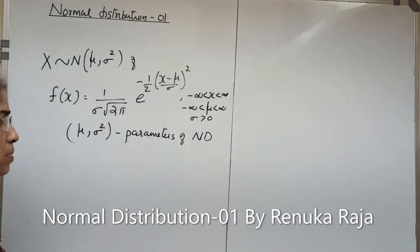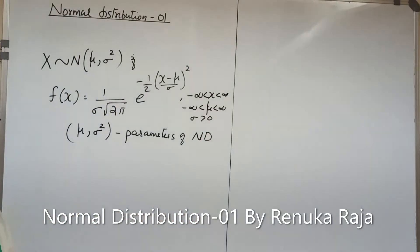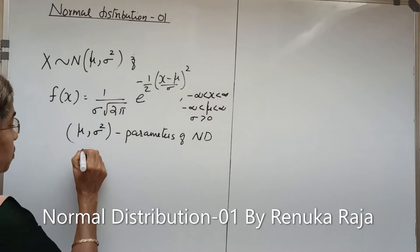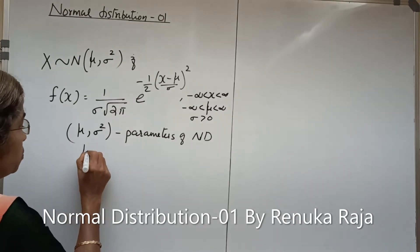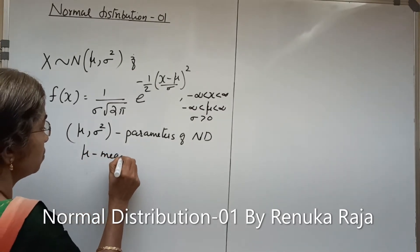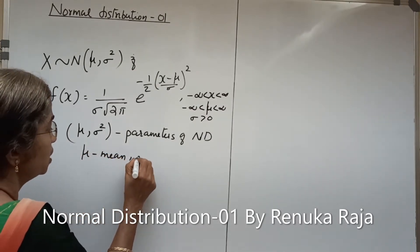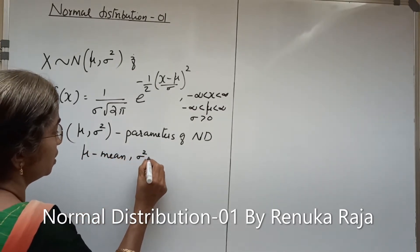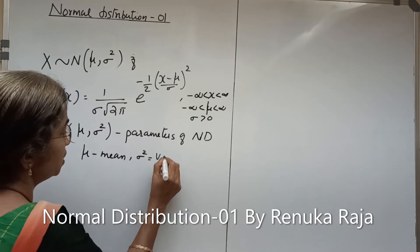Mu is the mean and sigma square is the variance. We will prove that mu is the mean and sigma square is the variance of normal distribution.